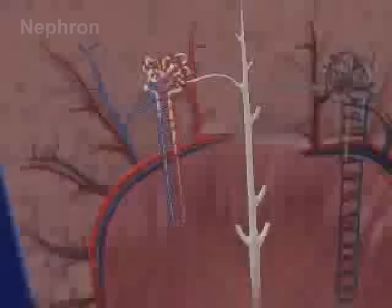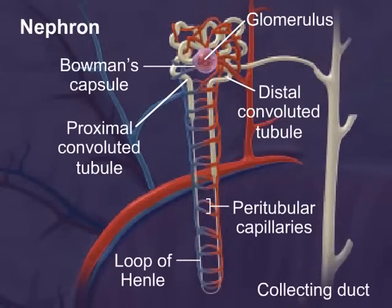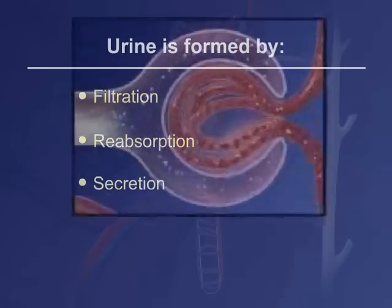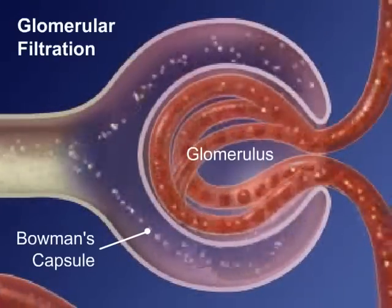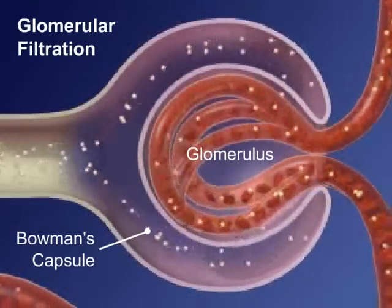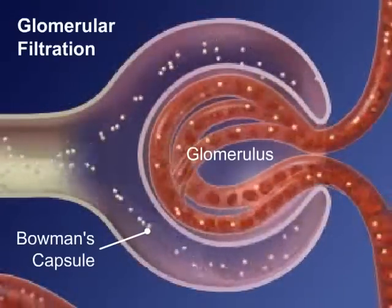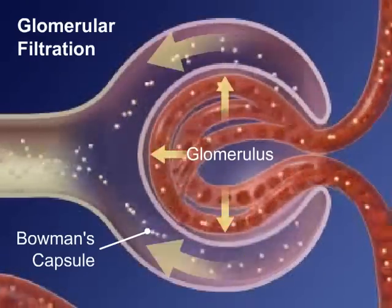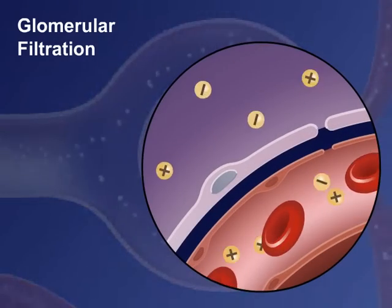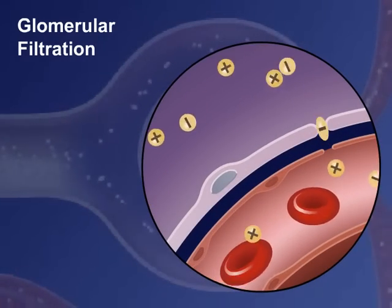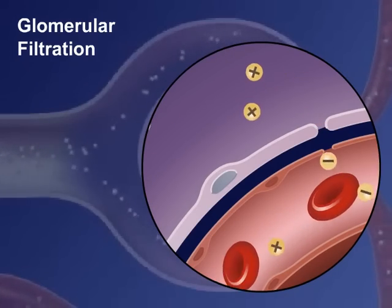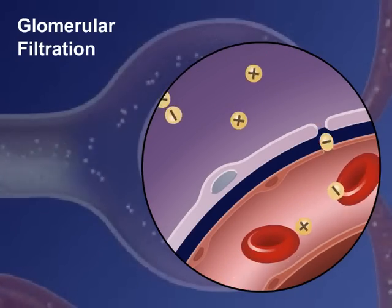Urine is formed by three processes in the nephron, the functional part of the kidney. In glomerular filtration, the glomerulus filters water and certain dissolved substances from the plasma of the blood. This results in increased blood pressure, which forces the plasma-like fluid from the blood into Bowman's capsule and then into the tubules. The filtrate includes many positive and negative ions. The filtrate does not have any proteins or red blood cells, which are too large to pass through the capillary membrane.